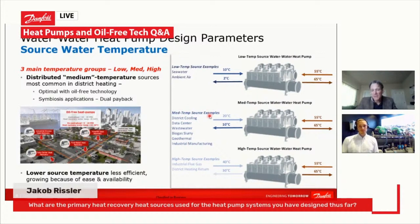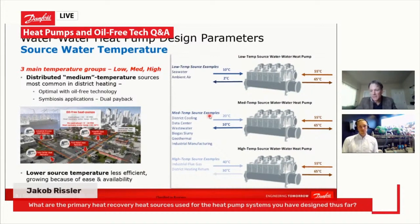Then you have the medium temperature heat sources. In general, these are what we call the symbiosis applications. The way we look at it, every chiller is a heat pump and every heat pump is a chiller. It's just how much you're lifting the temperature in terms of the cooling provided and the heating provided, and whether or not you're making use of the heating. In this category, most of these are symbiosis applications where you're making use of both the cooling and the heating.